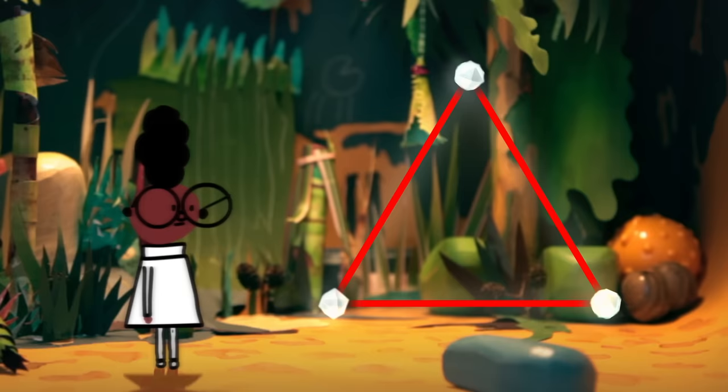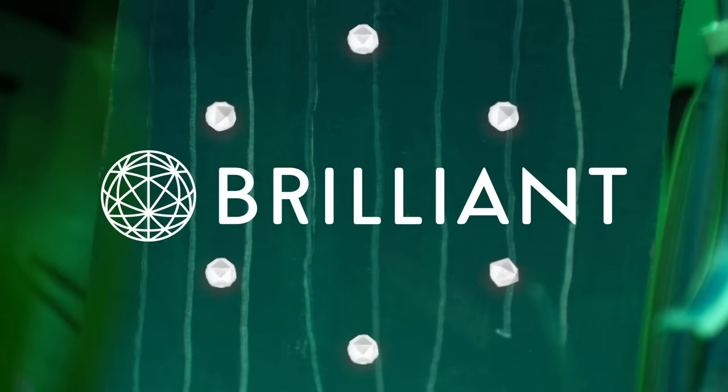A given triangular time portal can only transport one person before it closes. With these six chrononodules, will two portals always form, or could one of you be stranded in history?